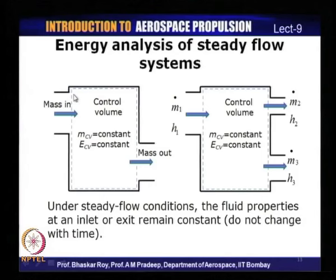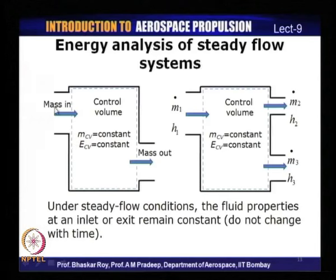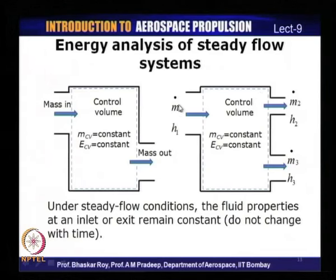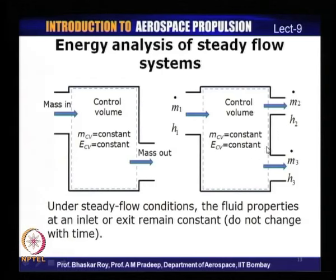For a steady flow system with certain mass entering and leaving, the net mass of the control volume is constant and the net energy associated with the control volume is also constant. This applies to both single entry/single exit systems and those with multiple entries and multiple exits. The basic definition remains: if net mass and net energy within the control volume both remain constant, we can approximate the process as steady flow.